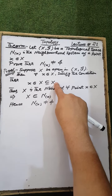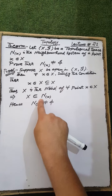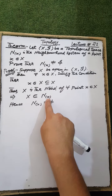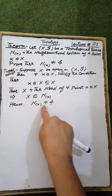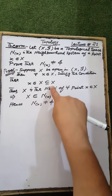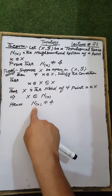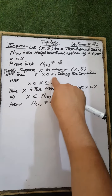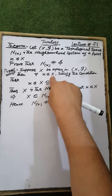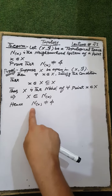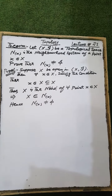That is, the ground set X is contained in the neighborhood system of a point x. That is, the neighborhood system of each point of the ground set X is non-empty. Therefore, the neighborhood system of each point of the ground set X is non-empty.